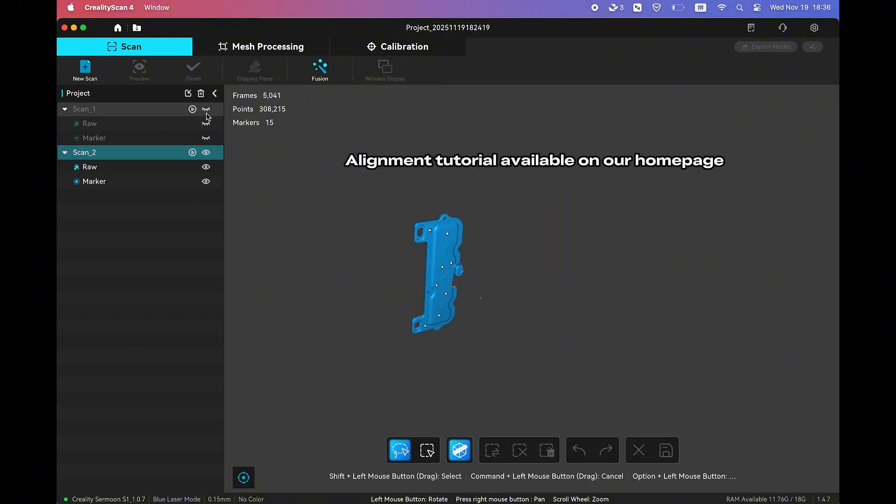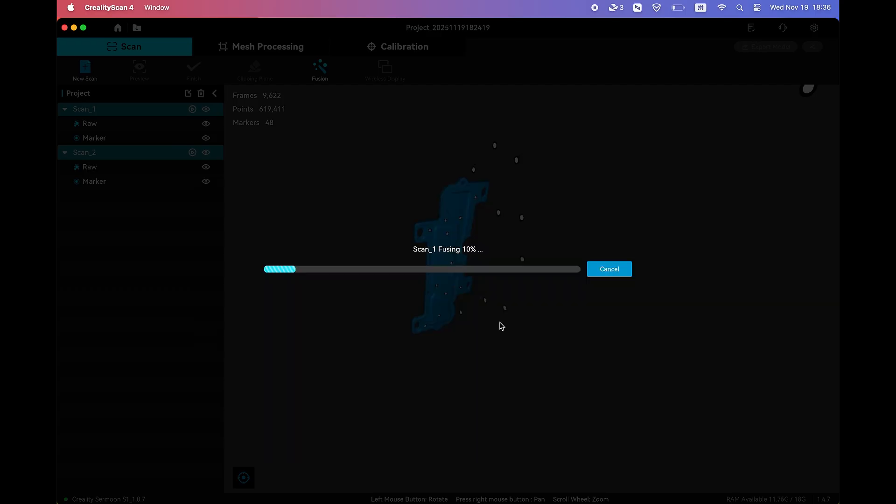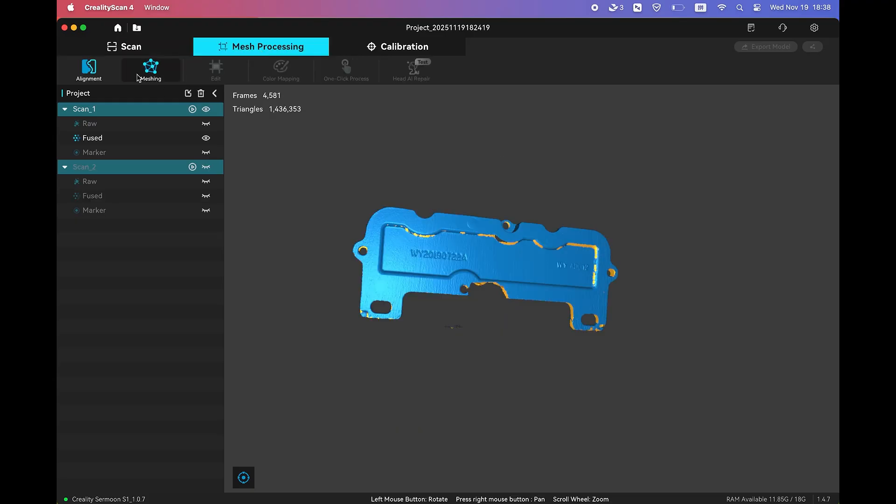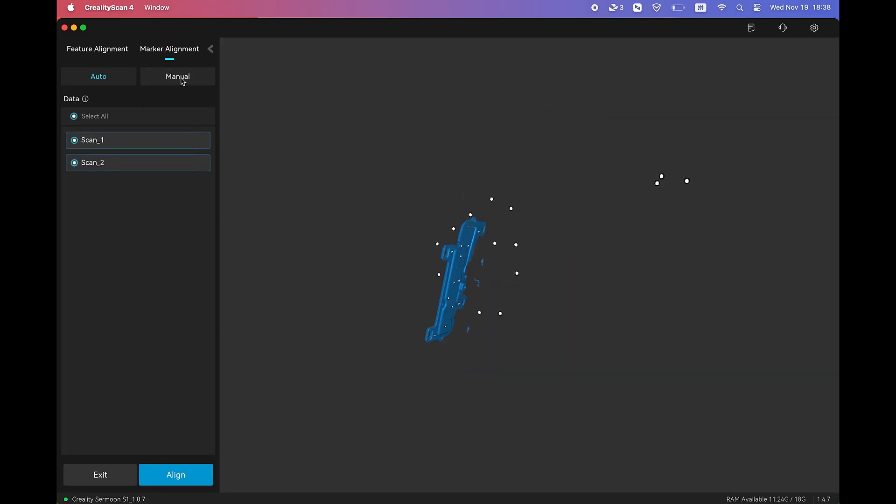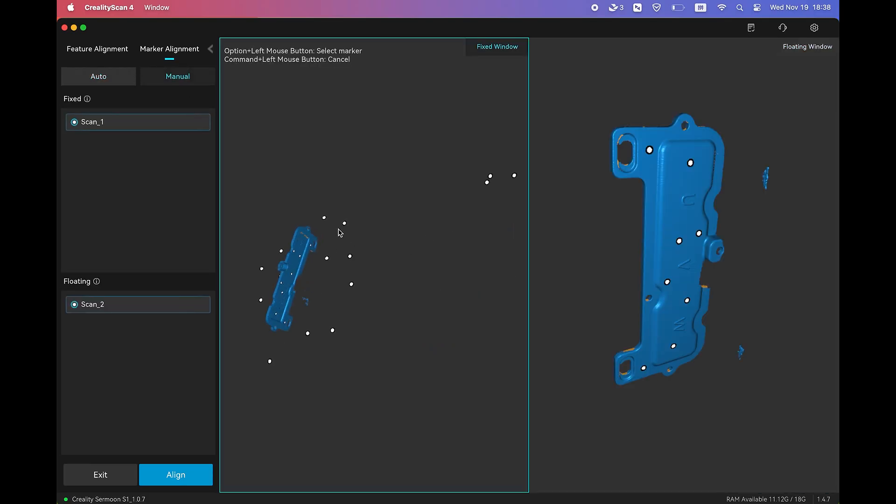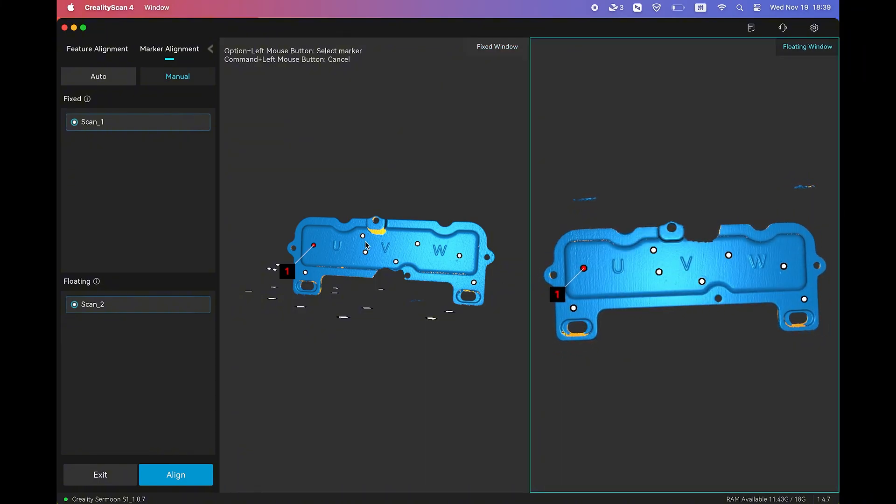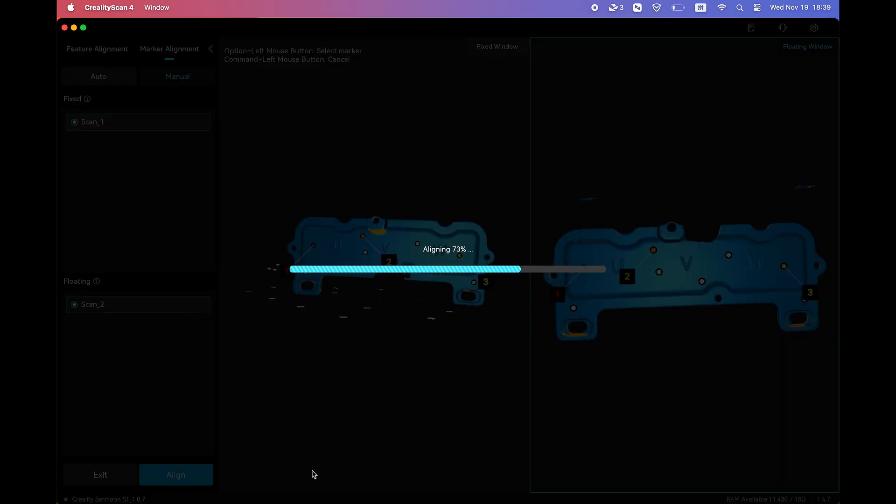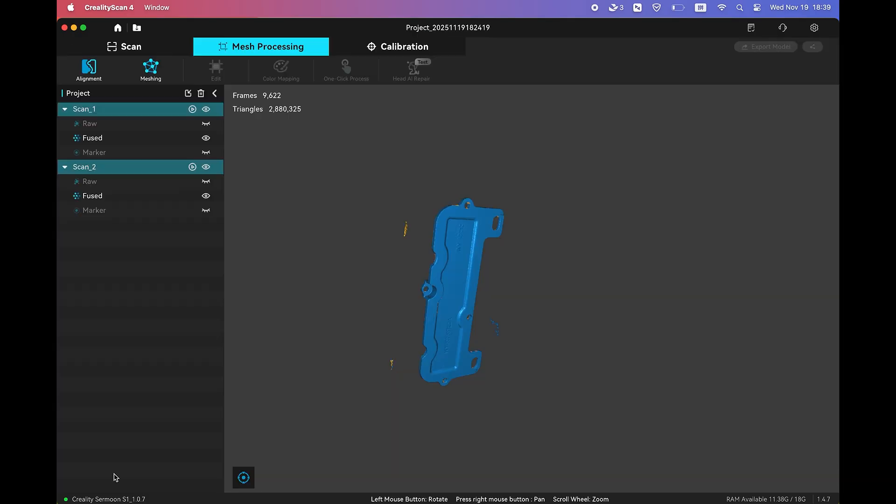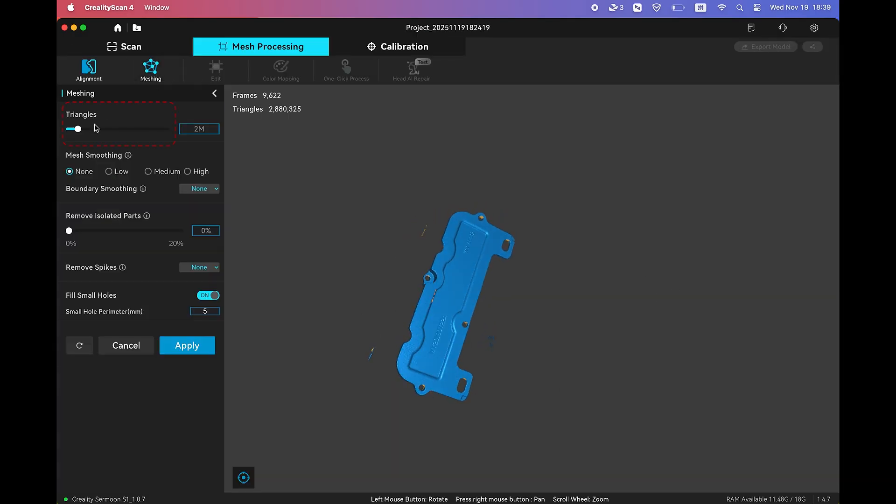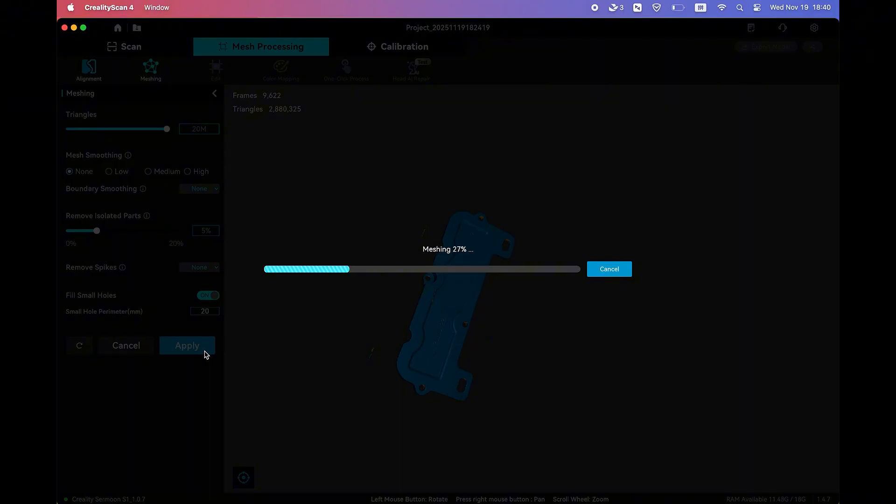When both scans are done, use the Manual Marker Alignment function. This lets you match the two sets of data using the common marker points on the part. Once everything is lined up, align the scans together and generate your final mesh.